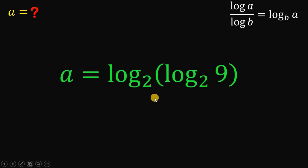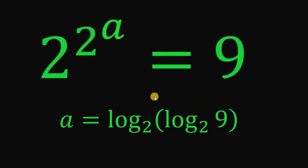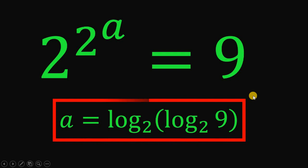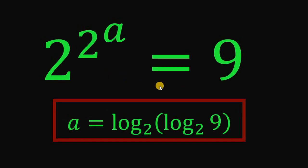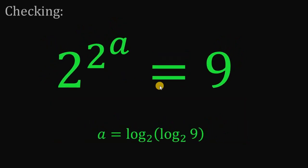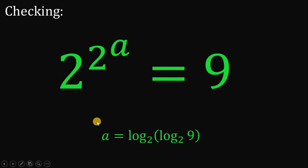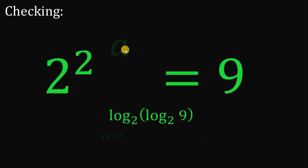And that is the value of A. Now, for some of you, of course, you need to make sure that this value of A is definitely the answer to this equation. So, let's have a quick checking. The answer to this question is logarithm of logarithm of 9 to the base of 2, to the base of 2. What we're going to do is replace this value into A.